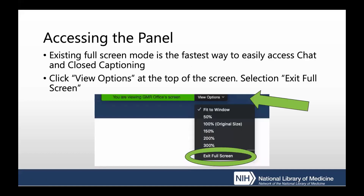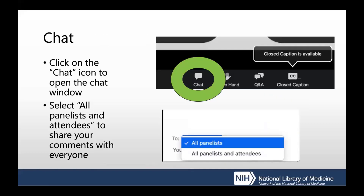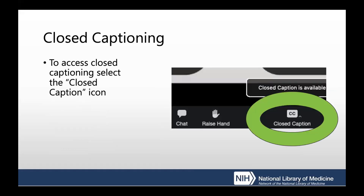We are using Zoom for today's webinar. Exiting full screen mode is the fastest and easiest way to access chat and closed captions. Click on View Options at the top of the screen and select Exit Full Screen. You are all automatically muted upon entry. To share questions or comments with the presenter and hosts, please use the chat function. Be sure to select everyone to share your comments and questions with everyone.